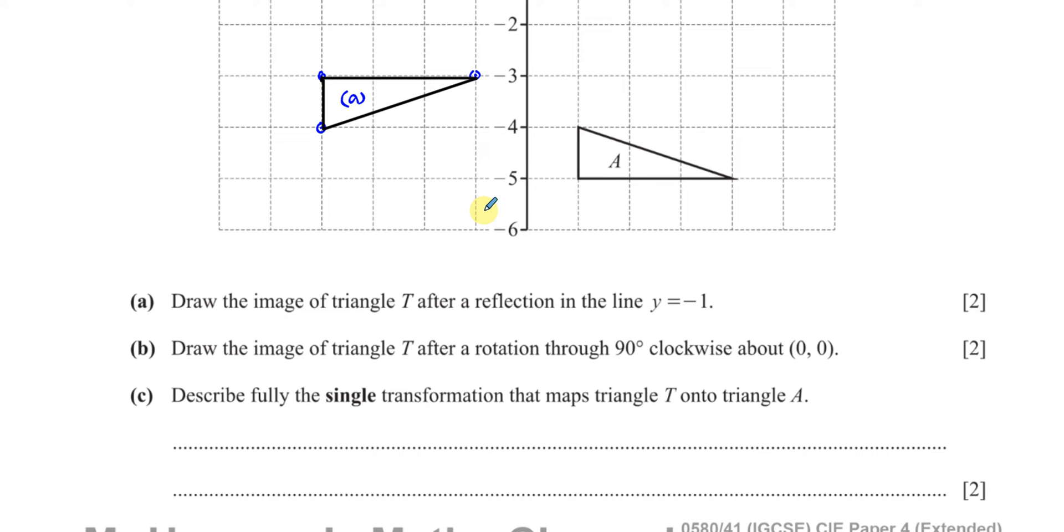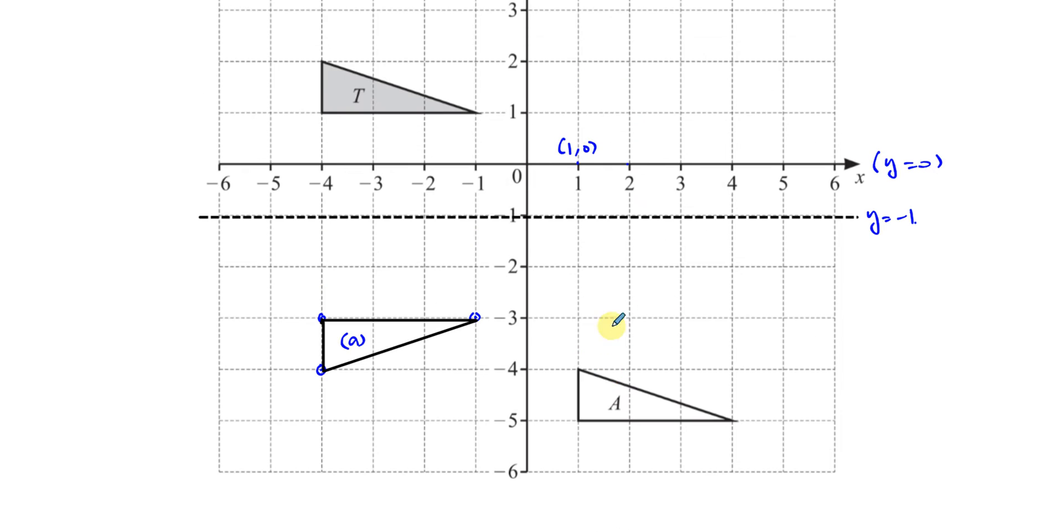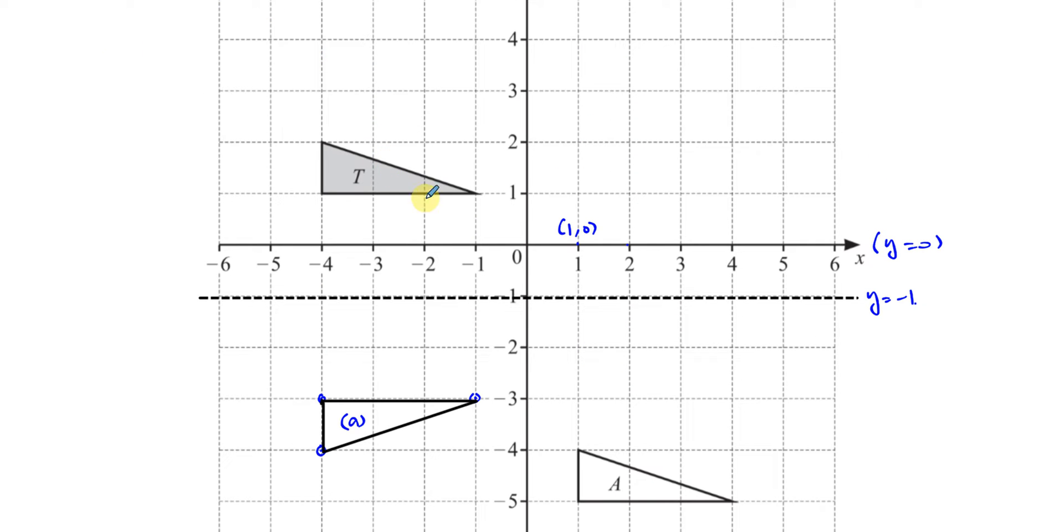Now, for part B, it says, draw the image of triangle T after a rotation through 90 degrees clockwise about (0,0). So we've got to rotate this 90 degrees clockwise. Now, what I'm going to do here, I'm going to suggest you use tracing paper. Tracing paper makes this very easy for you to do. So you should make sure that your school has tracing paper available for you during your exam. Always try to make sure that you get tracing paper available for you during your exam. The examining board is supposed to bring it, but just in case, make sure that your teacher tells the examiners in the morning of the exam that there should be tracing paper. If they don't, the school should provide it for them. Because that will help in this particular topic.